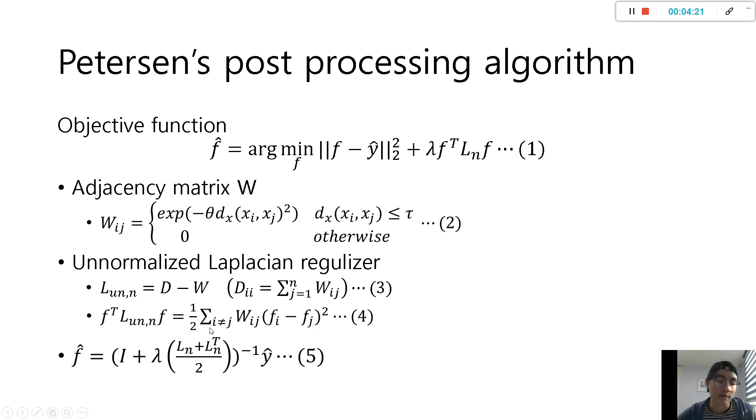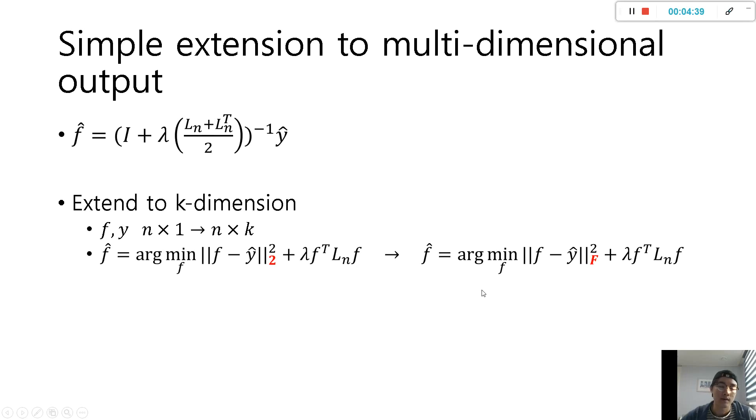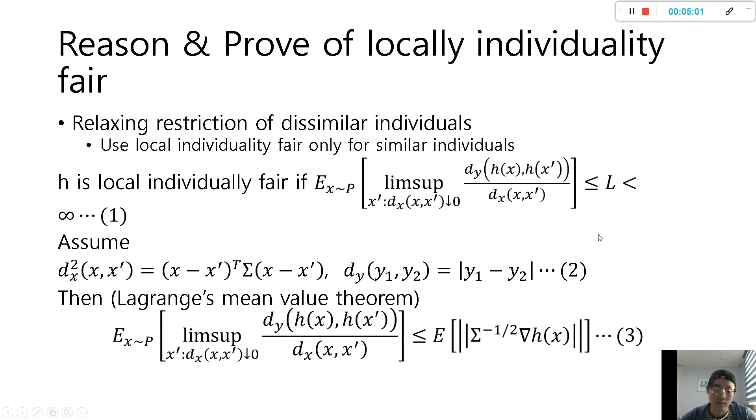So when we select f that makes equation 1 minimum, we can notice f will be small if i and j are similar individuals. Equation 5 is a simple form to get objective function. There is an advantage of this algorithm that it is easy to extend to higher dimensions. Assume that we want to extend to k dimensions. The only thing we need to do is change calculation of two-norms to Frobenius norm.